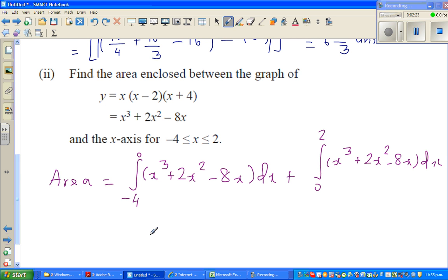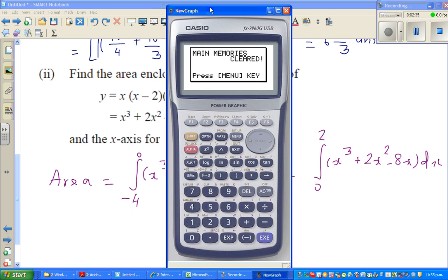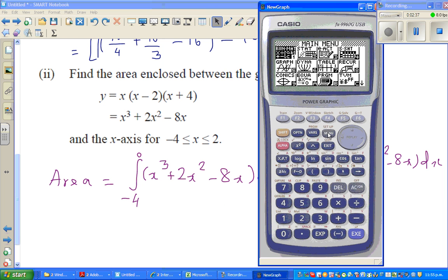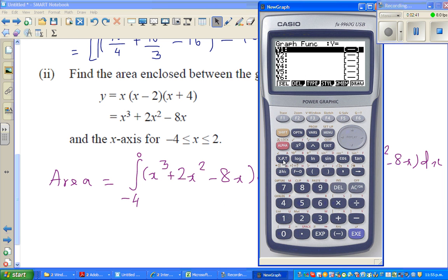Now, I'll not go over the whole process. I'll show you a different way of doing this on a graphic calculator, which is really exciting. So, get a calculator out. And menu, go to graph and type in this equation, which is x cubed plus 2x squared minus 8x.